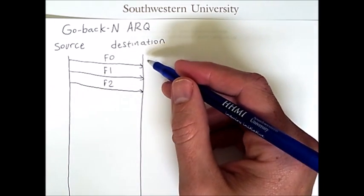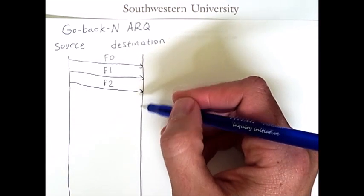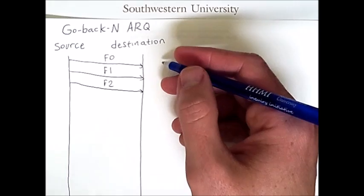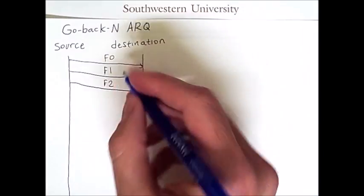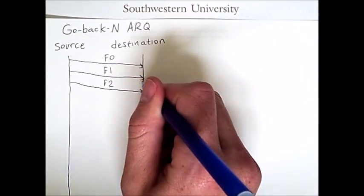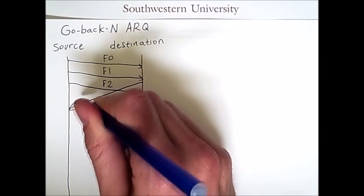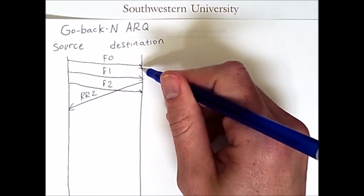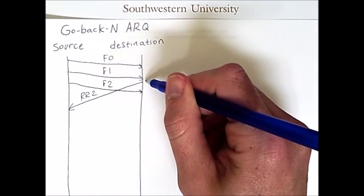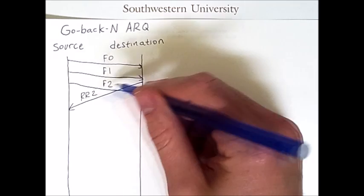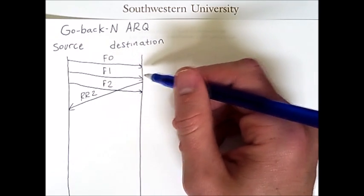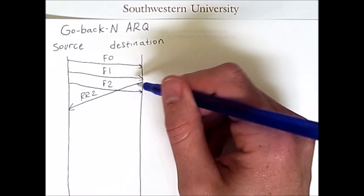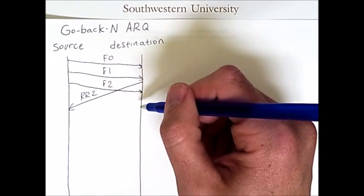And the destination does not have to acknowledge every frame individually, but if things are working well, it will periodically send acknowledgments in the form of ready-to-receive requests. So let's say that after receiving frame 1, it sends an RR2, indicating that because it has successfully received frame 1, it is now ready to receive frame 2. Now the destination didn't know that frame 2 was already on route, but this information will be updated down the line.